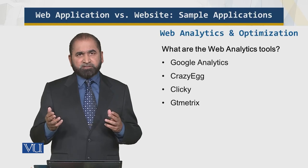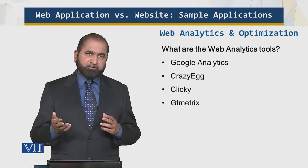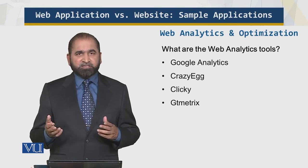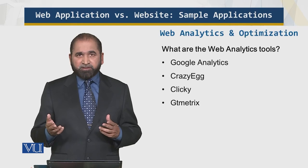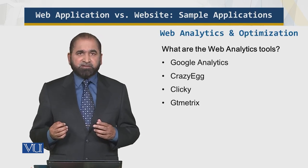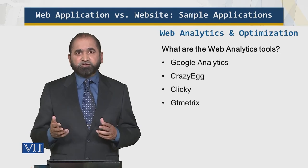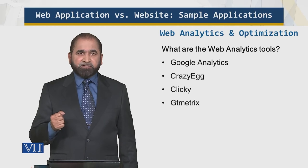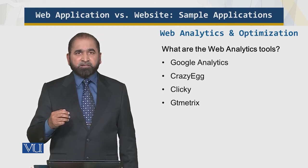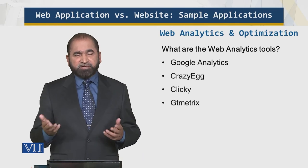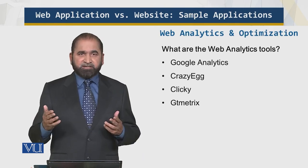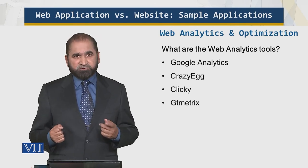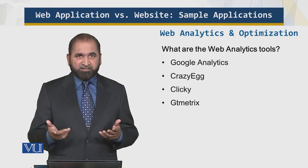Crazy Egg and Clicky explore and analyze the traffic — what users are doing on your website — and they generate nice, intuitive visualizations with a lot of information content that wasn't available 20 years ago. GT Metrix tells you the loading time for different pages and images for certain websites and can draw histograms. At the end of this module I will give you a demonstration.